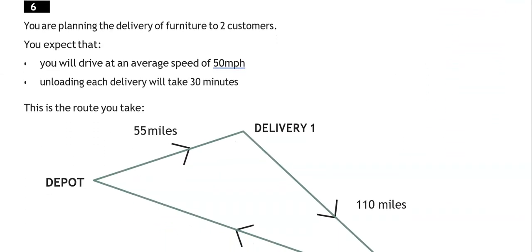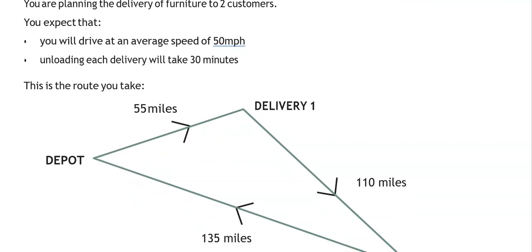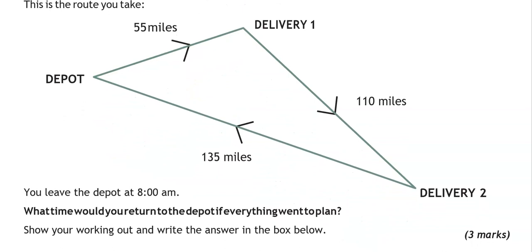And the final question for this part. You're planning the delivery of furniture to two customers. You expect that you'll drive at an average speed of 50 miles per hour. Unloading each delivery will take 30 minutes. You leave the depot at 8am. What time would you return to the depot if everything went to plan? Show your working out and write the answer in the box below.